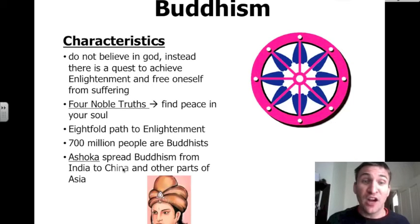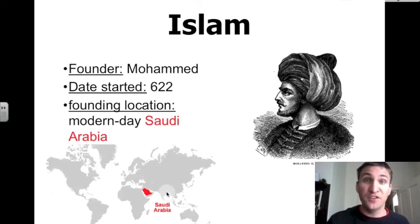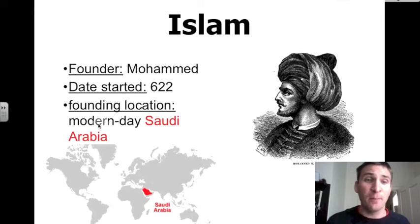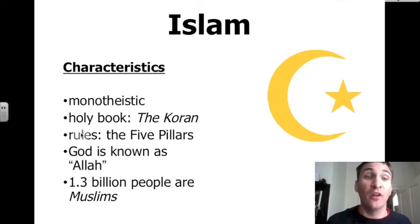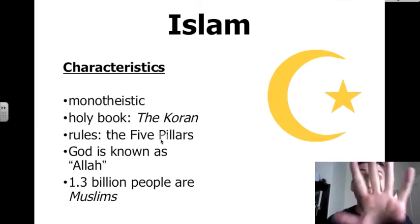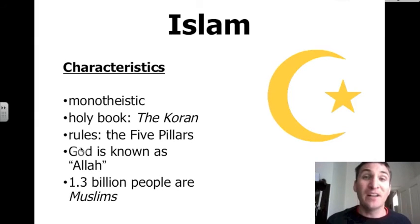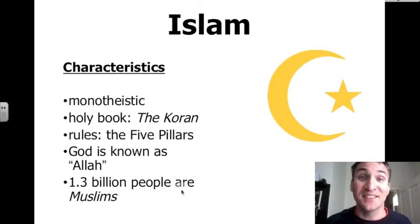From Buddhism to Islam. The founder of Islam was the Prophet Muhammad. The date Islam started was 622, and its founding location was in modern-day Saudi Arabia, northeast of Africa in the Middle East. Islam is a monotheistic religion — Muslims practice the belief of only one God. The holy book in Islam is called the Quran. The rules of Islam are found in the five pillars, five ways of being a good, true Muslim. Muslims call their God Allah, and there are 1.3 billion people in the world who practice Islam.